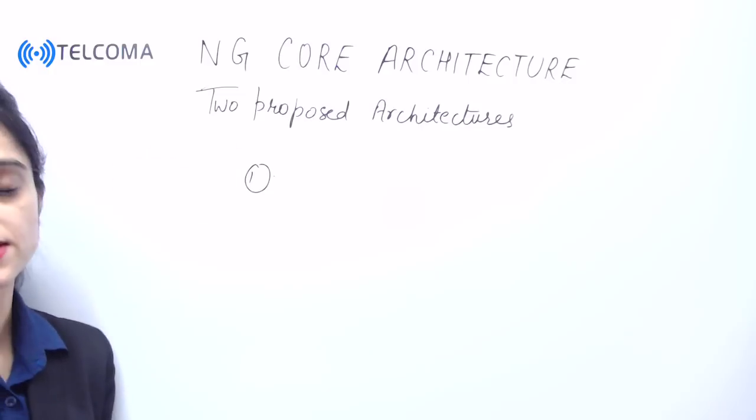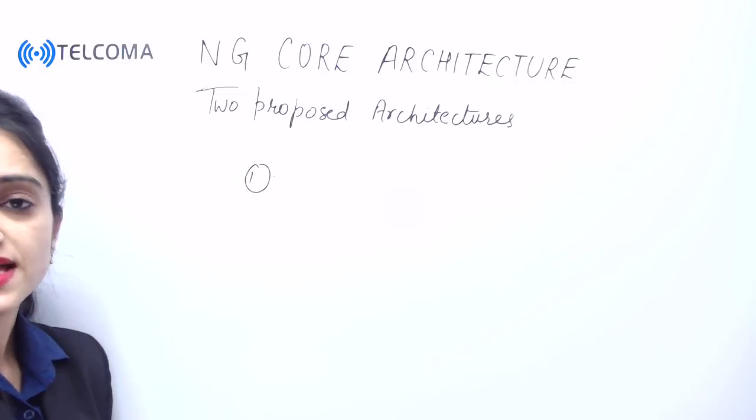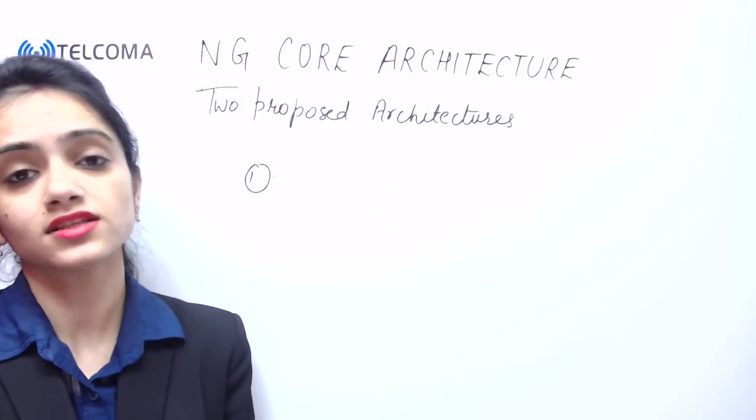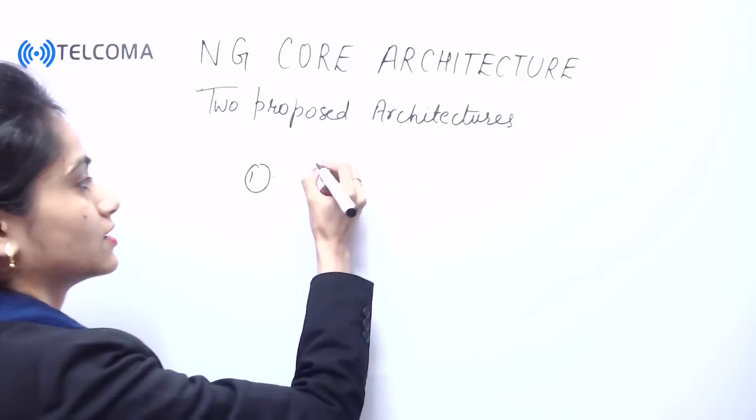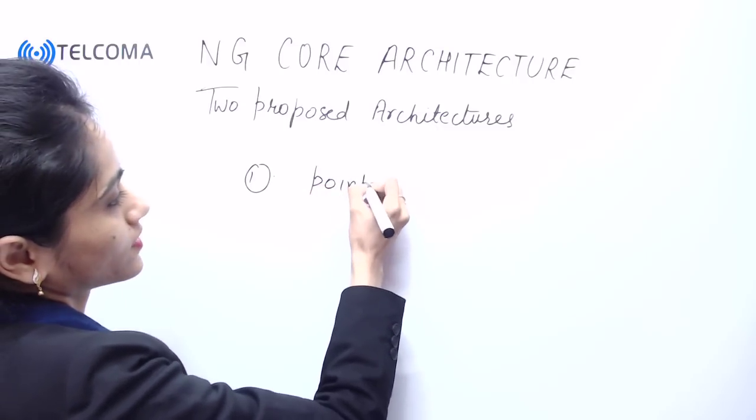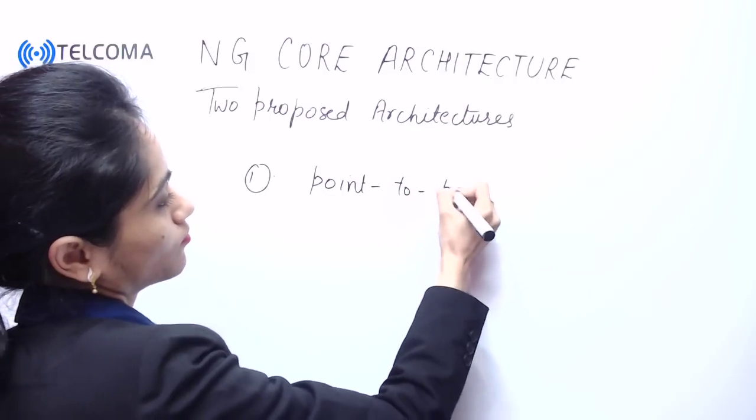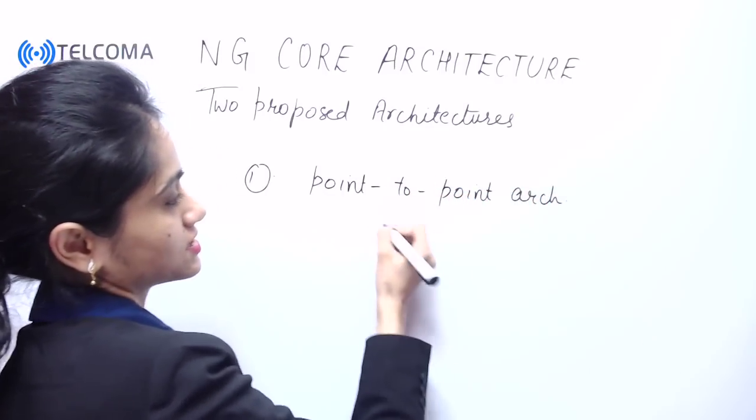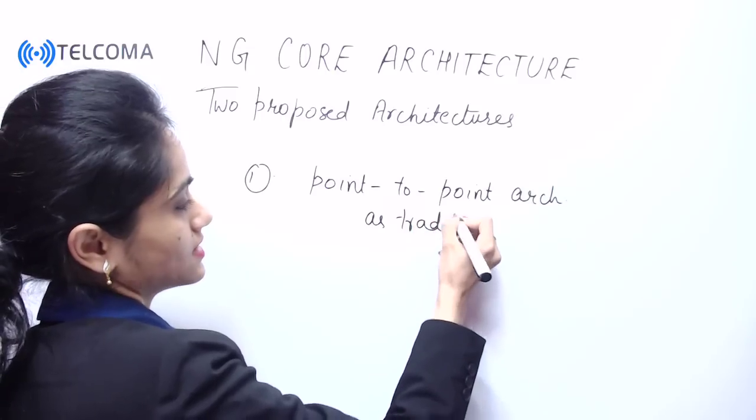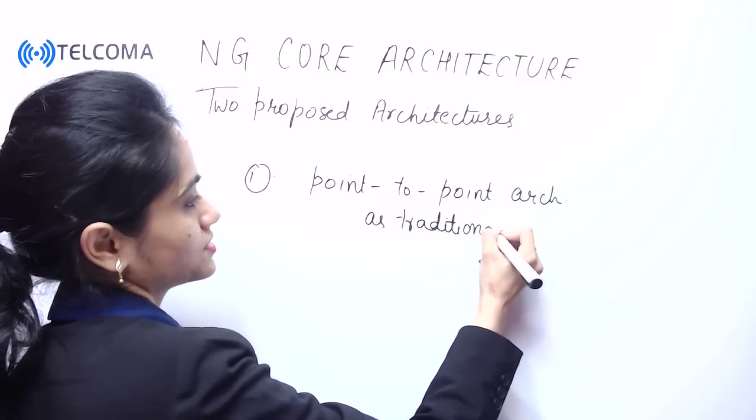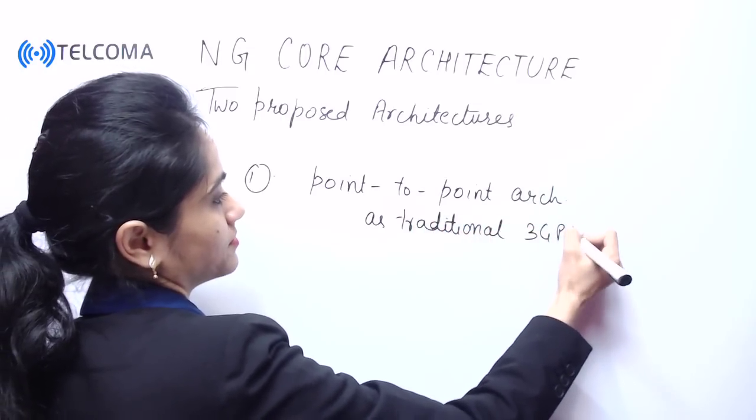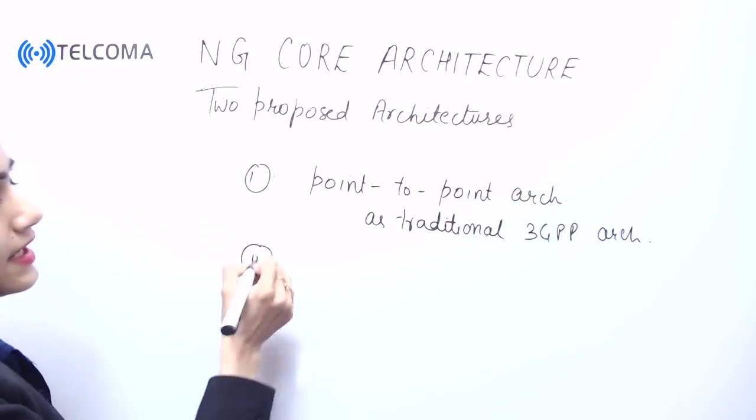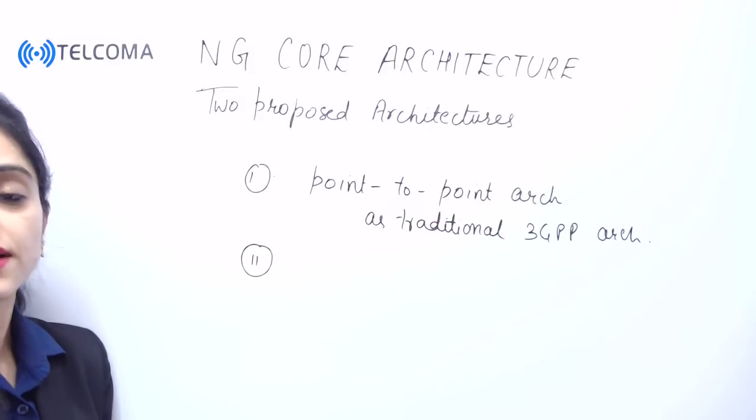The very first point is that there should be point-to-point architecture that can be thought of as traditional 3GPP architecture. So, point-to-point architecture as traditional 3GPP architecture.